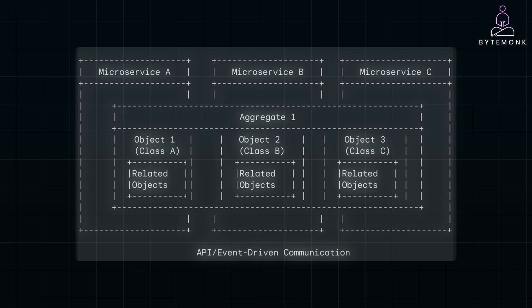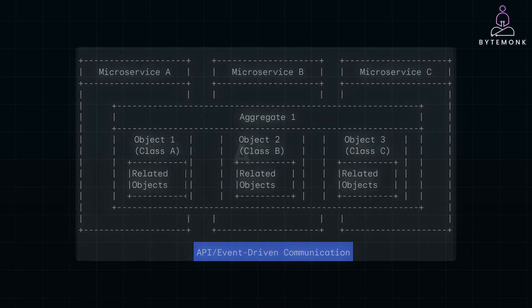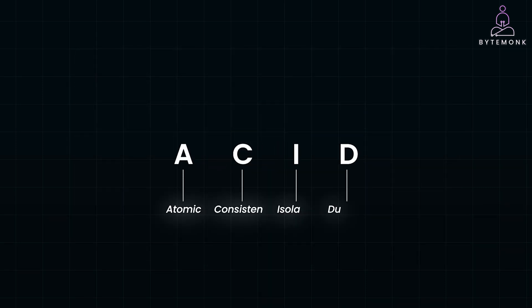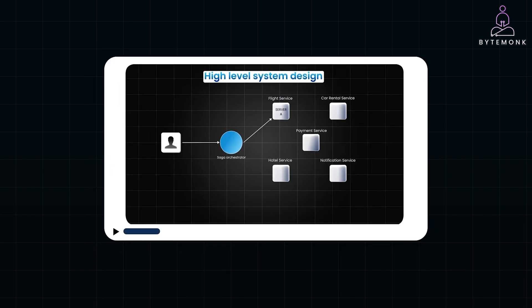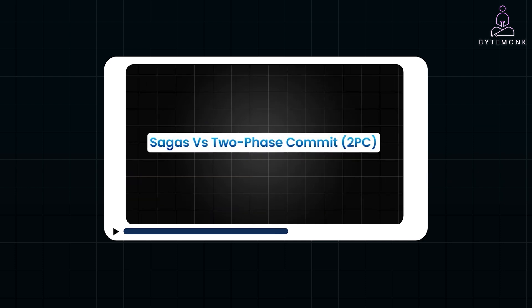Furthermore, each aggregate is designed so that any operation that modifies it can be handled within a single transaction. This aligns perfectly with microservices architecture because it ensures that all changes to an aggregate are either fully completed or not done at all within a single service, using ACID principles. I have previously made a video on the saga pattern, which is applied when you need to maintain data consistency across different services. By combining aggregates with sagas, you can manage complex business logic across services while maintaining data consistency.